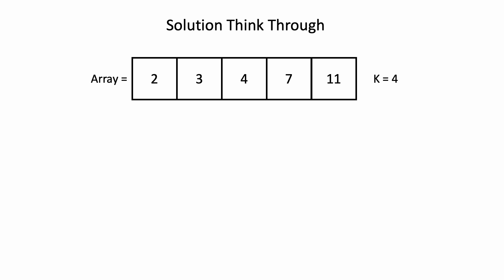We want to find a way to direct our search. If we can somehow compute how many integers are missing before the element at an index, then we can use that information to direct our binary search.